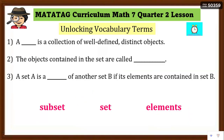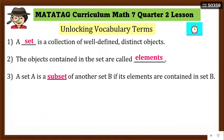Now let's unlock vocabulary: set, elements, and subset. A set is a collection or group of well-defined distinct objects — like the set of animals with horse, dog, and lion. Elements are the objects contained in a set; horse, lion, and dog are elements of the set of animals. A subset is a part of another set, where the elements are contained in that other set.